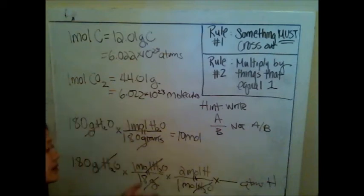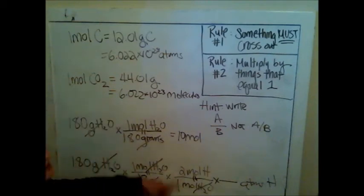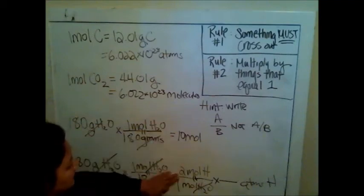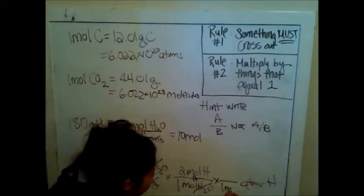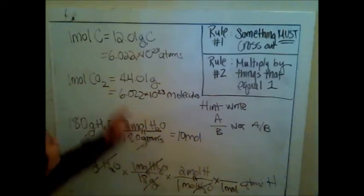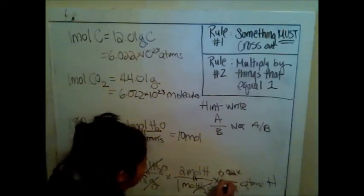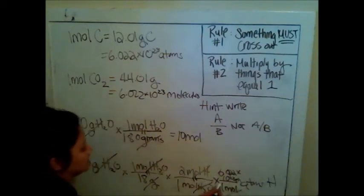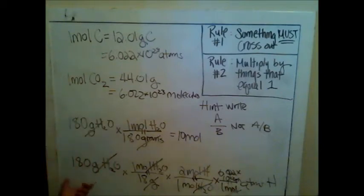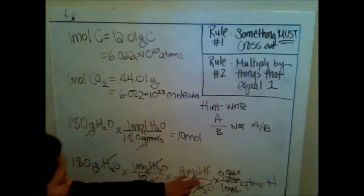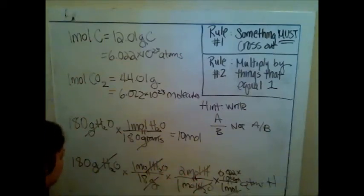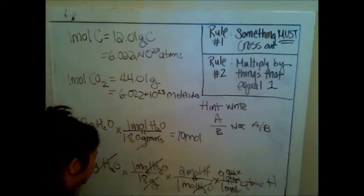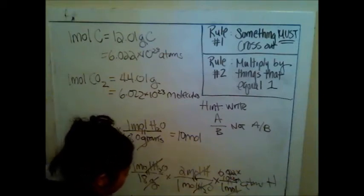Then I have to keep going because I want to be in the word atoms, but I'm still in moles. My last step says rule number one again, moles is on top, so moles has to be on bottom. This time it would be 1 mole of H, and 1 mole of H would be 6.022 times 10 to the 23rd atoms of H. I say, did something cross out? Yes. Is this an equal statement? Yes. So in my calculator, I would end up doing 180 divided by 18 times 2 times 6.022 times 10 to the 23rd, which should end up being 1.2044 times 10 to the 24th atoms of H.